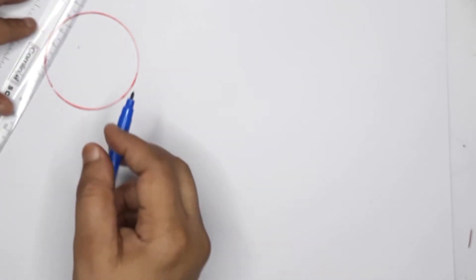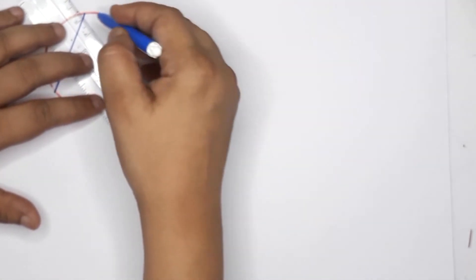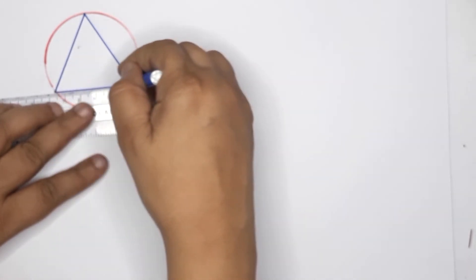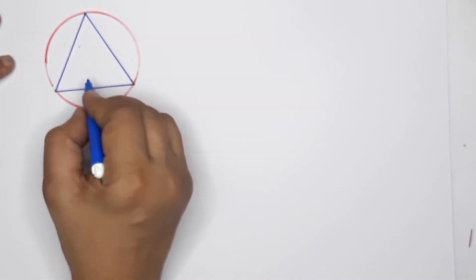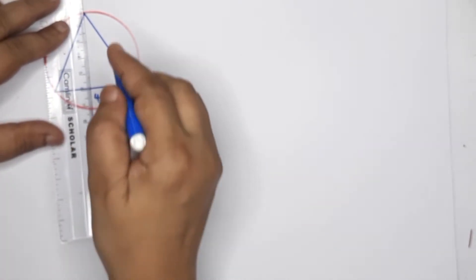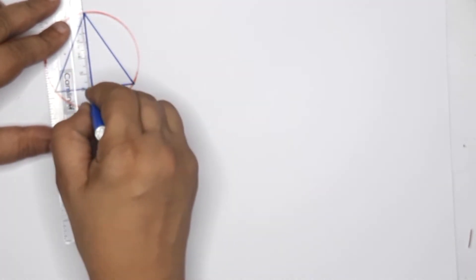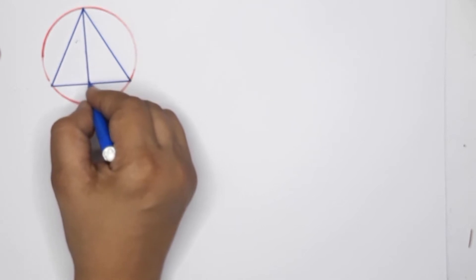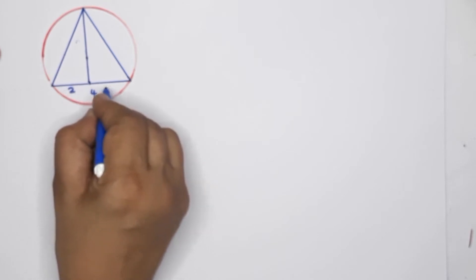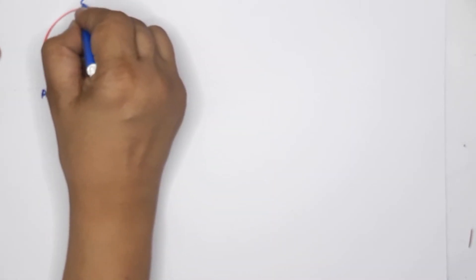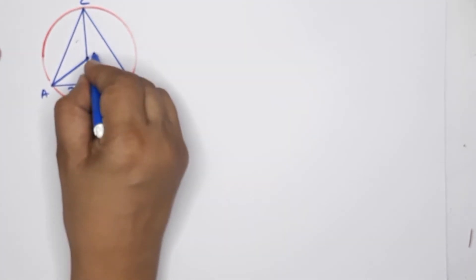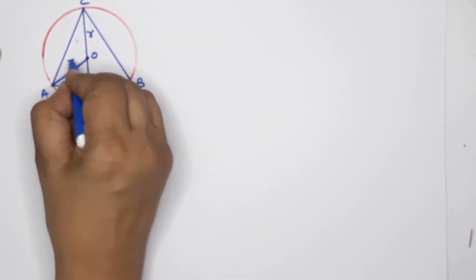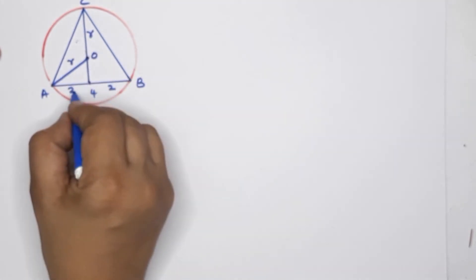We have an isosceles triangle inscribed in a circle, with a triangle edge. The triangle has a base of 4 centimeters and a height of 4 centimeters. For this isosceles triangle, we draw the perpendicular bisector. I will name the vertices A, B, C and join the center O. OA, OB, and OC are the radii.